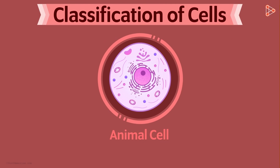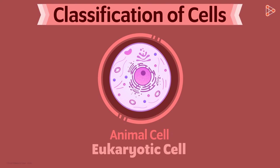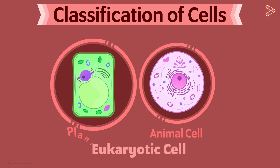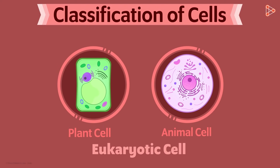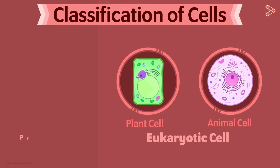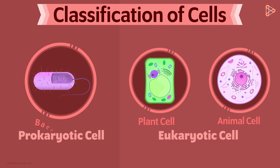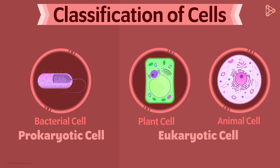So is an animal cell an example of a eukaryotic cell? Yes it is. Both plant and animal cells can be included in the category of eukaryotic cells. So which cells fall under the prokaryotic type? Cells of lower organisms, like various bacteria, have prokaryotic cells.